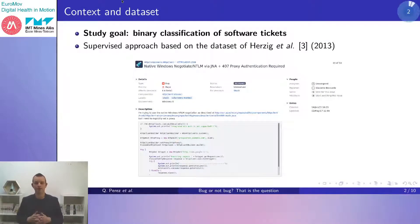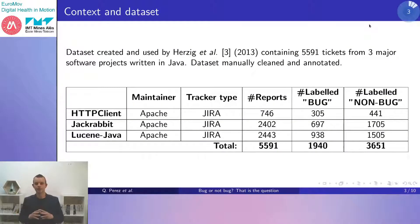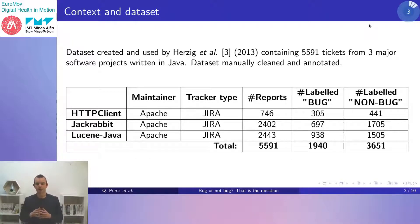As an introduction, I will give you some elements about the context. The main goal addressed in this study is the binary classification of software tickets — more precisely, to automatically distinguish tickets describing bugs from other issues. To do so, we have developed a supervised approach based on the curated dataset of tickets produced by Herzigetab. The dataset is composed of 5,591 tickets from three popular Java open source projects: HTTP Client, JackRabbit, and Lucent Java. Among the 5,591 tickets, 1,940 are labelled as bug and 3,651 are labelled non-bug.